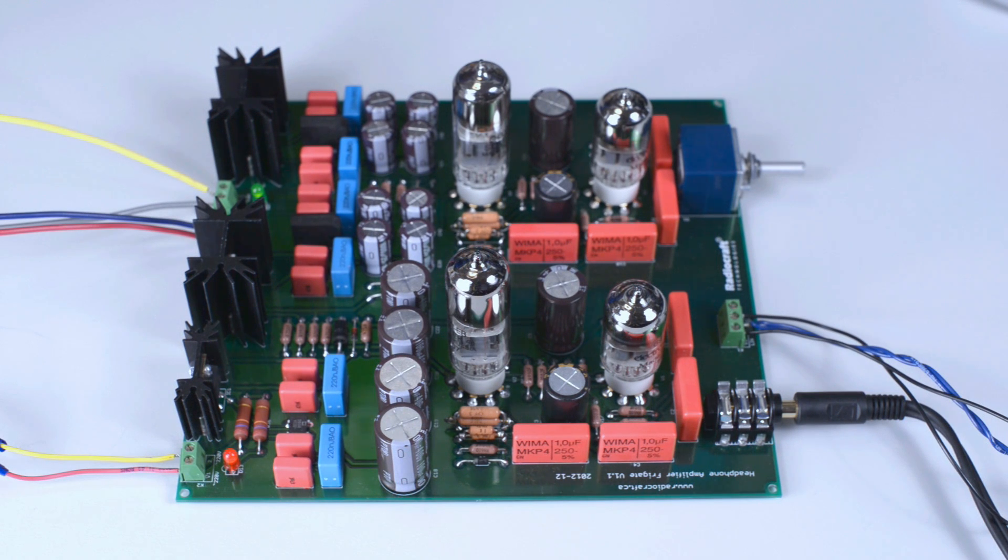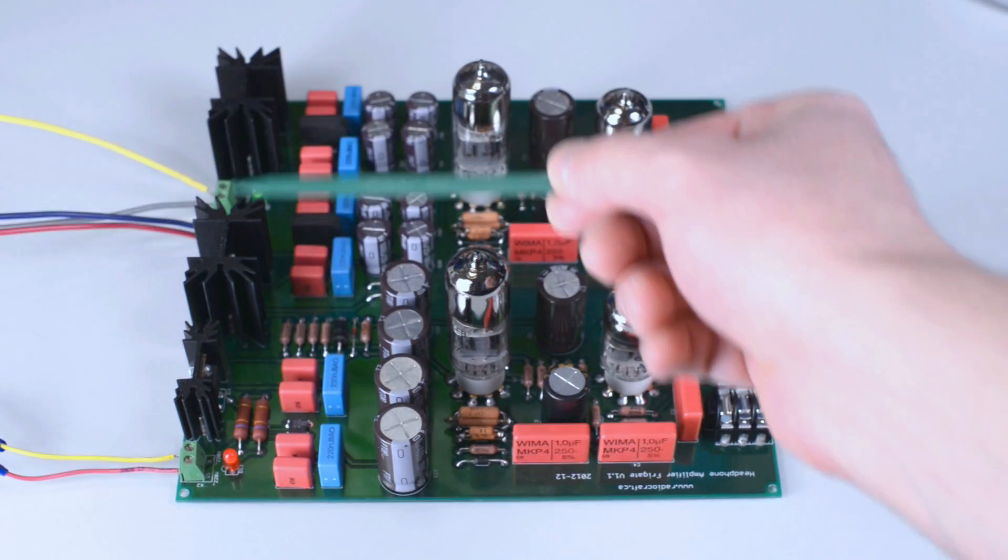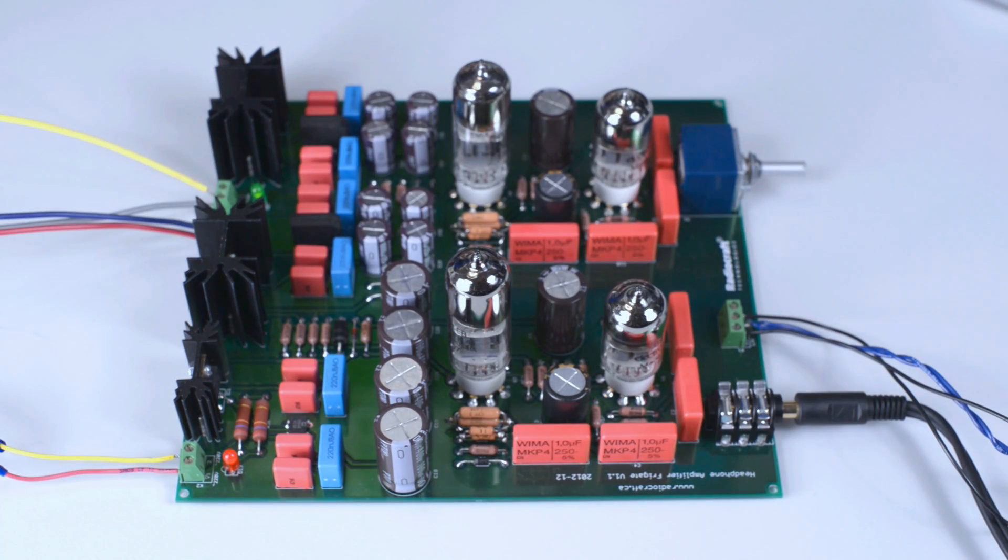In each bus of the power supply we are using stabilizing devices. These three heat sinks are accommodating three regulators which this power supply has. In the filament buses of the power supply we are using low drop voltage regulators LM1084V, and in the B-plus bus of the power supply we are using MOSFET transistor IRF840.